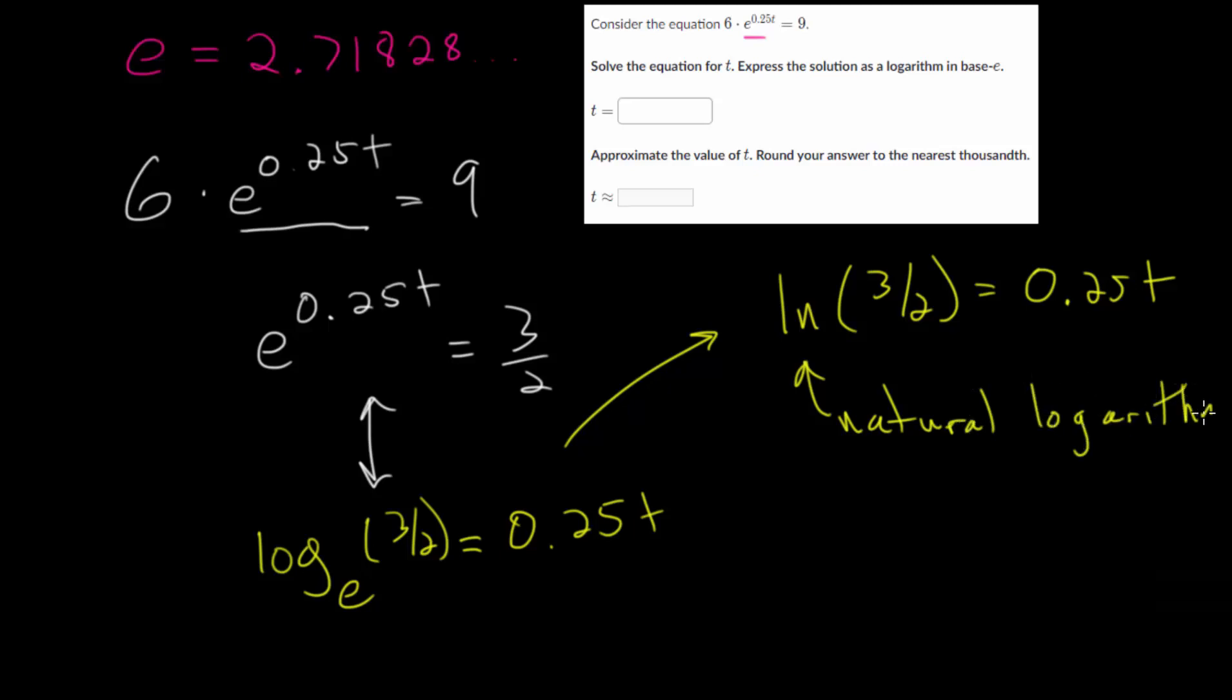But at this point, we've solved our equation for the logarithm. And now we just need to finish by getting T by itself. So we'll divide each side by 0.25. Or you can remember that this is really just 1 fourth. So we can multiply each side of the equation by 4. So in conclusion, we get 4 times the natural log of 3 halves is equal to T. And that's what we'll put up in our first box. So 4 natural log 3 halves is equal to T. And we'll need the calculator to round it to the 1,000th place.